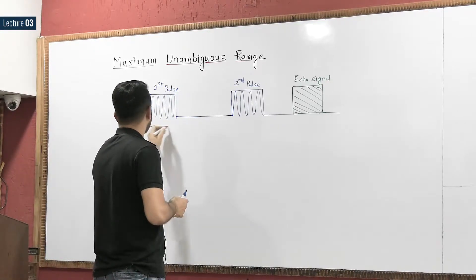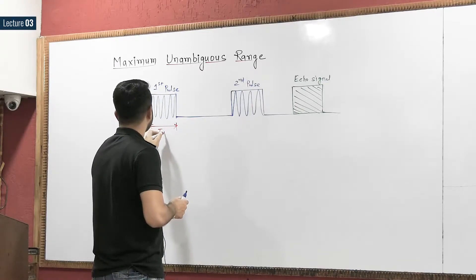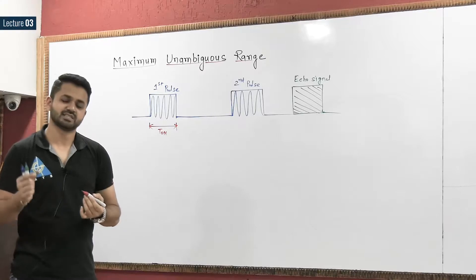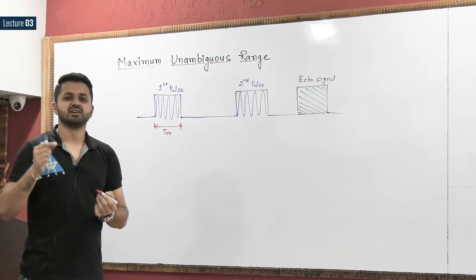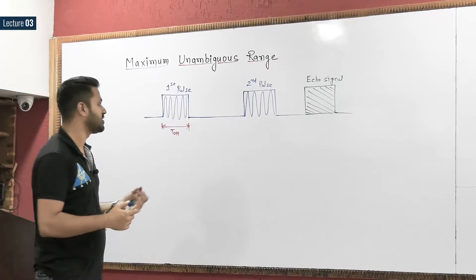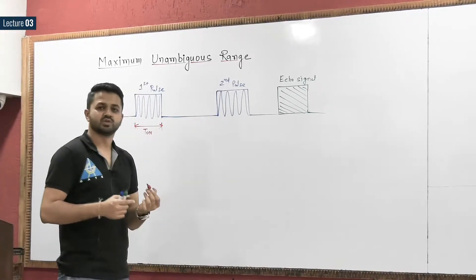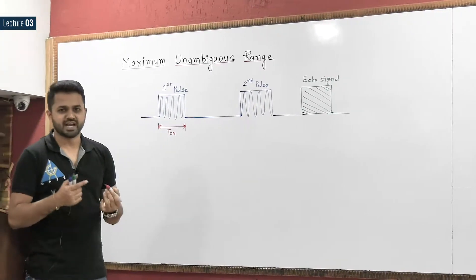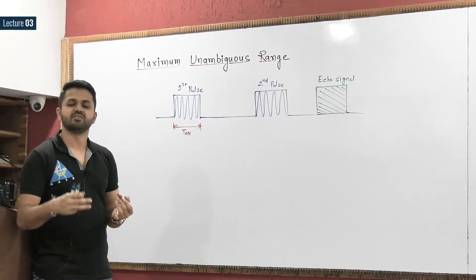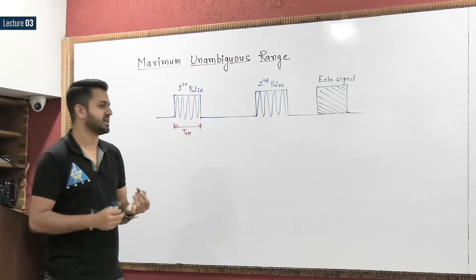We have to calculate the range of the target before transmitting the second pulse — that gives the range without any ambiguity, because we have not yet transmitted the second pulse. If we get the echo signal corresponding to the first pulse only, then we will get the correct range of the target.